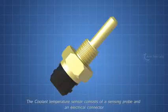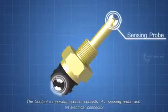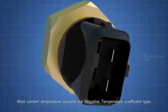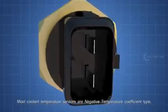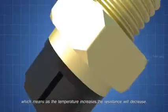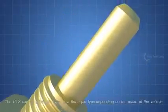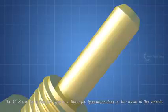The coolant temperature sensor consists of a sensing probe and an electrical connector. Most coolant temperature sensors are negative temperature coefficient type, which means as the temperature increases, the resistance will decrease. The CTS can be a 2 pin type or a 3 pin type, depending on the make of the vehicle.